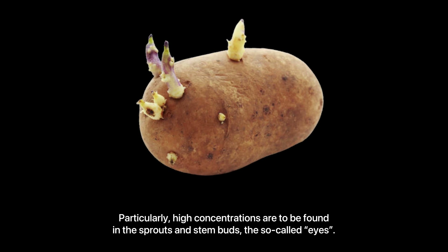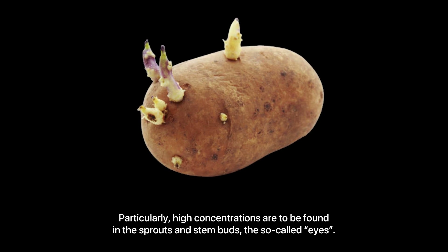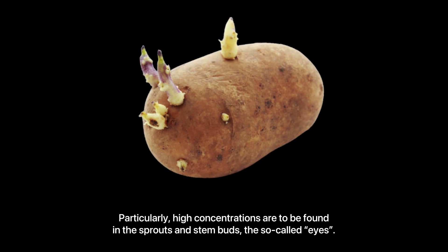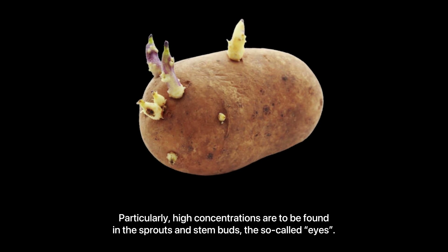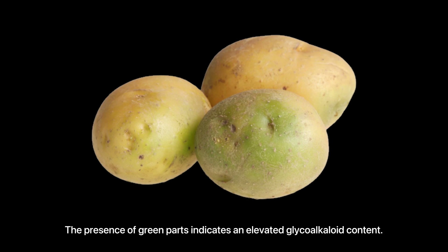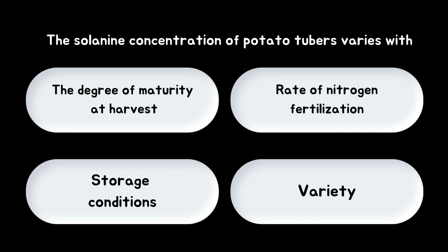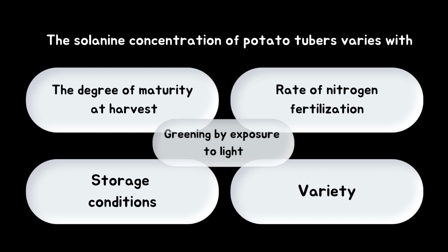Particularly high concentrations are to be found in the sprouts and stem buds — the so-called eyes. The presence of green parts indicates an elevated glycoalkaloid content. The solanine concentration of potato tubers varies with the degree of maturity at harvest, rate of nitrogen fertilization, storage conditions, variety, and greening by exposure to light.